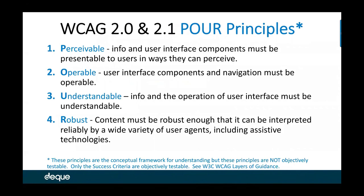WCAG 2.0 and 2.1 map the conceptual framework of principles to POUR — Perceivable, Operable, Understandable, and Robust. From a human perspective, memorizing 38 different requirements is hard. The concept of perceivable — can information get into a person's mind? Operable — can it be used by a person with a disability? Understandable — is it possible for them to understand and operate it? And robust — will it work in the future? These are wonderful for human understanding, but they're not objectively testable.